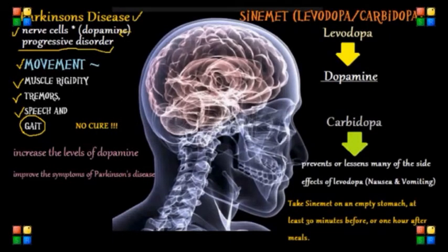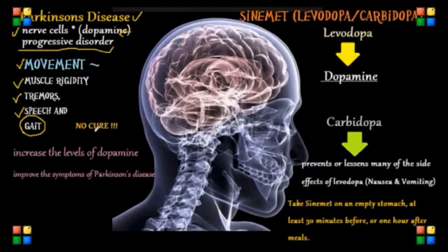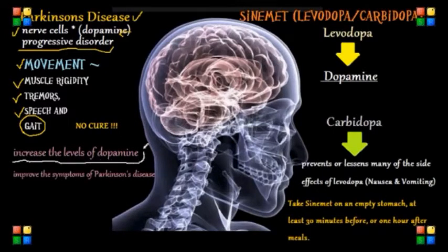There are mainly two general pharmacological approaches to treating Parkinson's disease. The first approach is to attempt to increase the levels of dopamine within the brain.